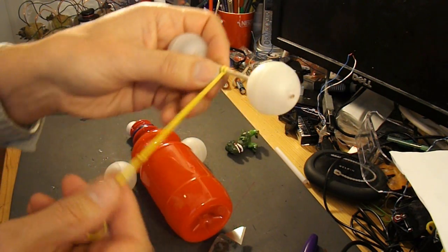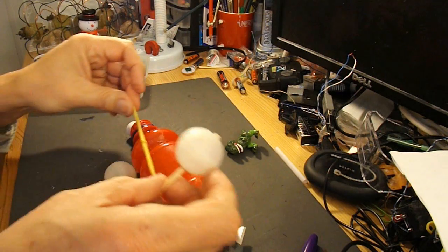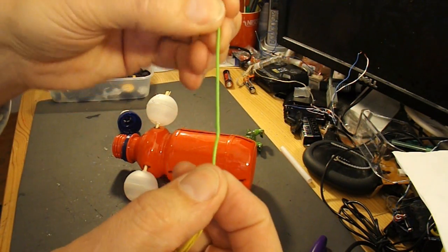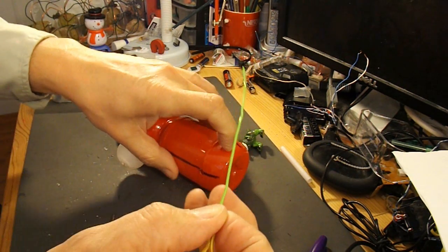I want that to be good and tight, we don't want it to come loose. Straightened out a paper clip so I can use that to poke the rubber band through.